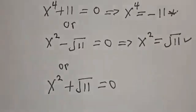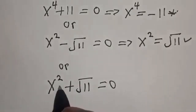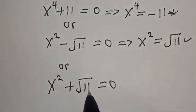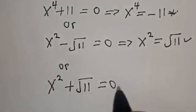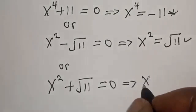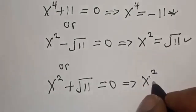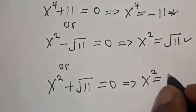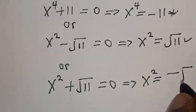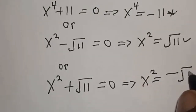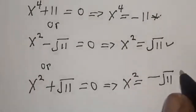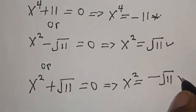Also from here, s squared plus square root of 11 is equal to 0. This implies that s squared is equal to minus square root of 11. We reject this.